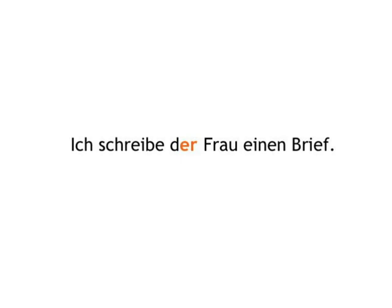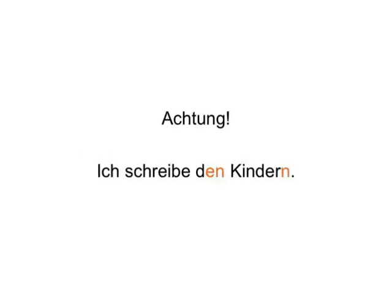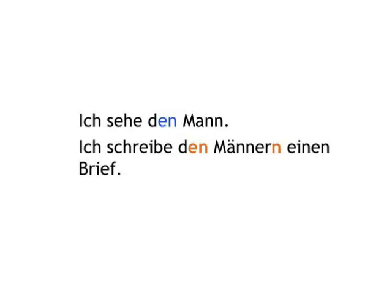The plural forms are the same in all three genders as per usual. But — Achtung! Watch out! In the dative plural, the noun gets an ending too. Writing to the children is: Ich schreibe den Kindern. So we get a double whammy N in the plural — one added to the article, one to the noun. With the N on the noun as well, you can't confuse this with the accusative singular: Ich sehe den Mann vs. Ich schreibe den Männern einen Brief.